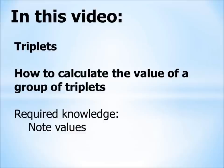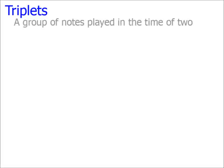Have a look at my video on note values first if you need to. Triplets are a group of notes, usually three of them in a group, which are played in the time of two. I'll explain more about this in a moment, but to start, let's make sure we know what triplets look like.